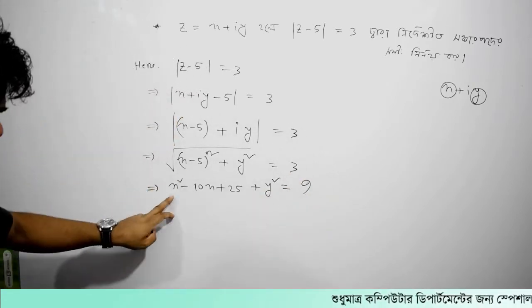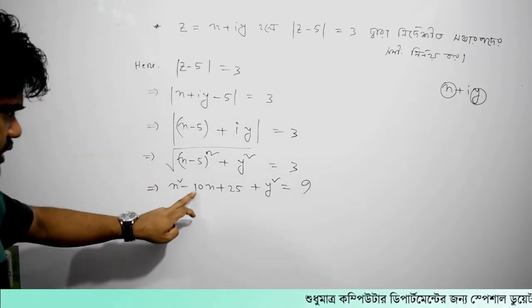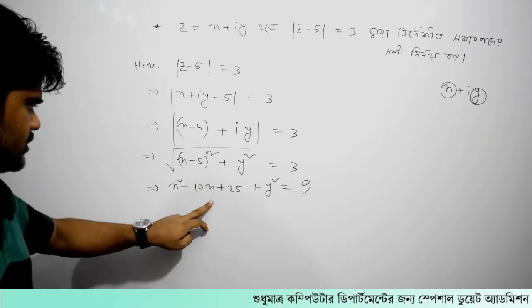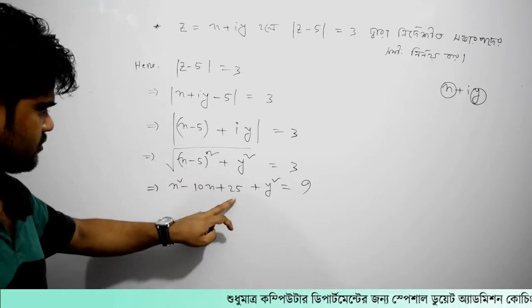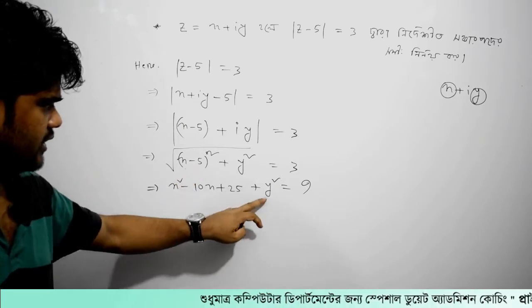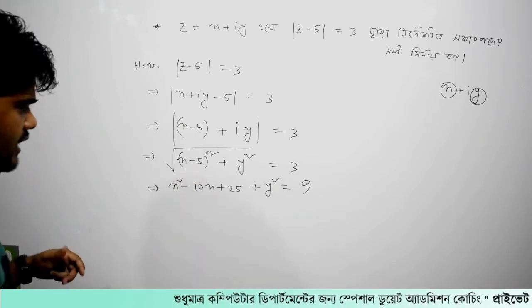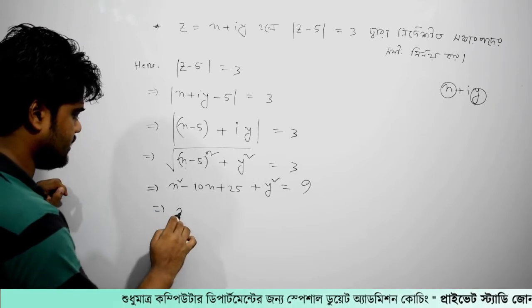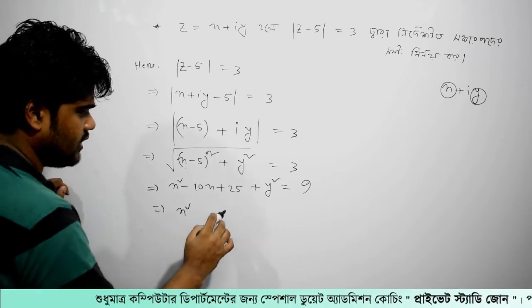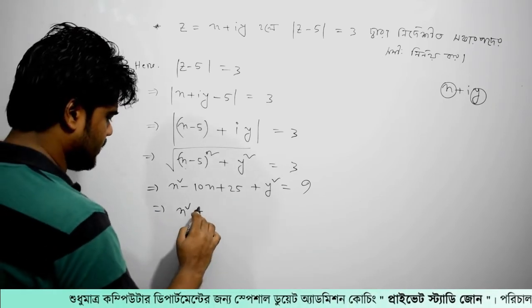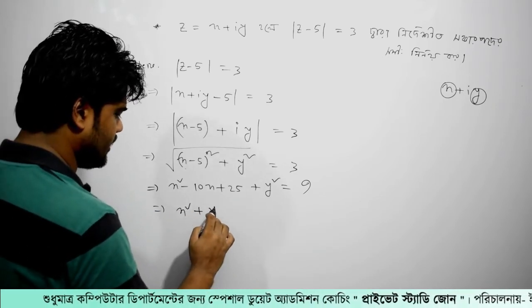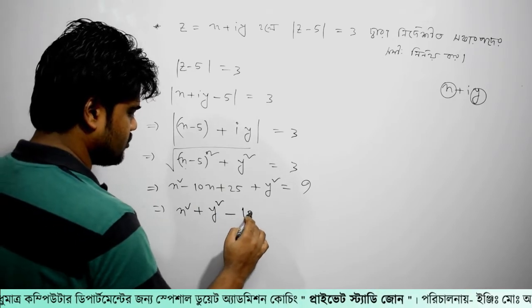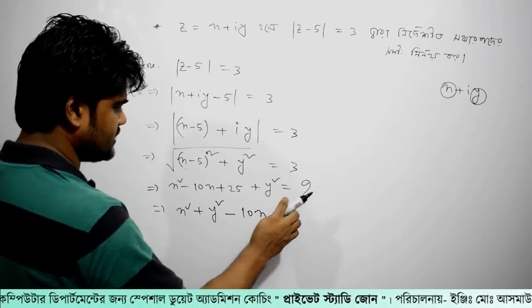We have x² minus 2ab, then 2x plus b², then y². We have 2 equations: x² plus y² minus 2x equals 9.